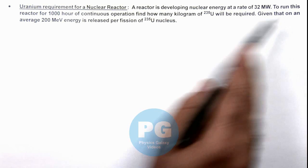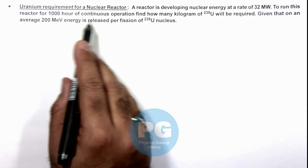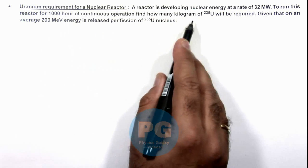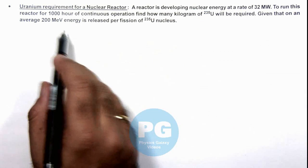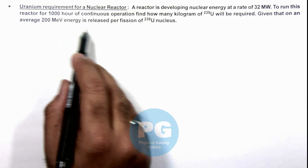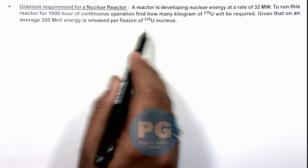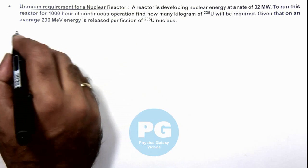To run this reactor for 1000 hours of continuous operation, we are required to find how many kilograms of U-235 will be required. Given that on average, 200 million electron volts of energy is released per fission of uranium nucleus.